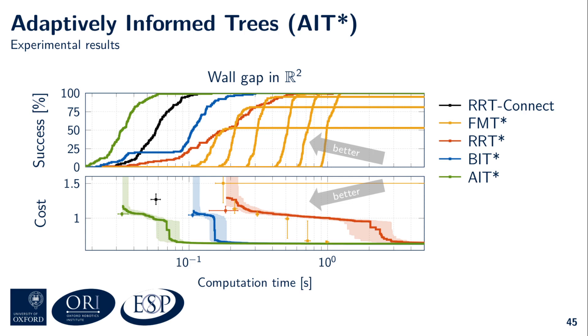RRT-Connect and FMT* are not anytime algorithms, and cannot improve the quality of their initial solution given more computation time. There are several lines and dots for FMT* in these plots because I've run FMT* with several batch sizes, which must be specified in advance. You can see in these plots that AIT* finds both the initial solution and the optimal homotopy class on this problem faster than any other tested planner.